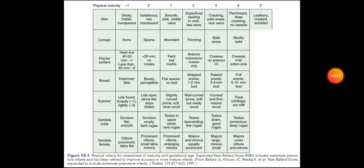The fourth parameter is breast. Imperceptible carries negative one point. Barely perceptible carries zero points. Flat areola with no bud carries one point. Stippled areola with one to two millimeter bud carries two points. Raised areola with three to four millimeter bud carries three points. Full areola with five to ten millimeter bud carries four points.